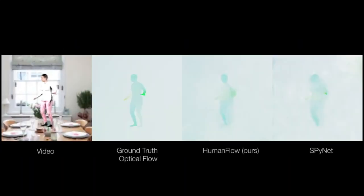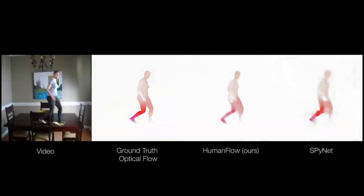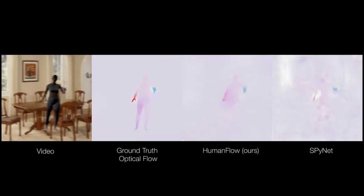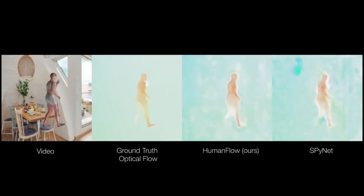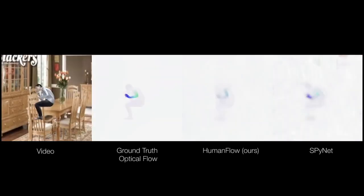We train a new convolutional neural network to estimate human flow fields from pairs of images. Our human flow algorithm is more accurate than a wide range of top methods on held-out test data.